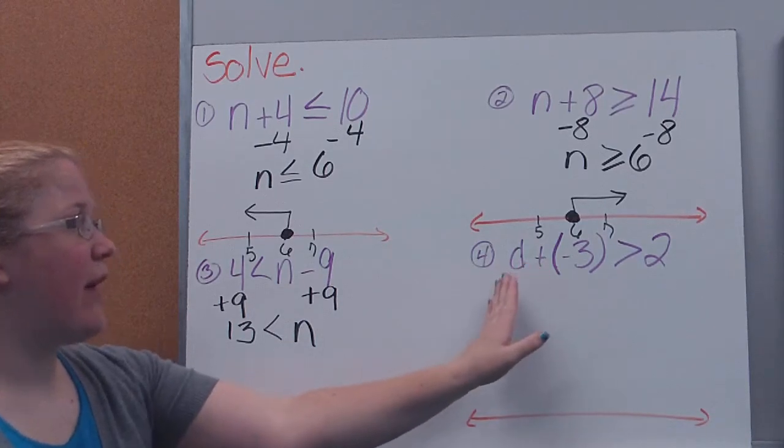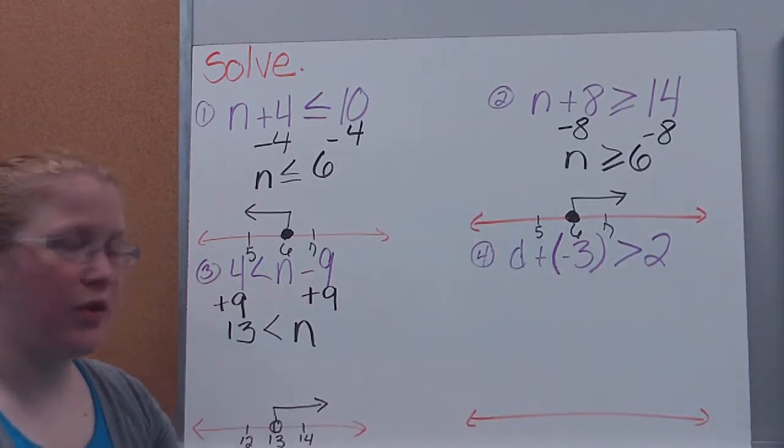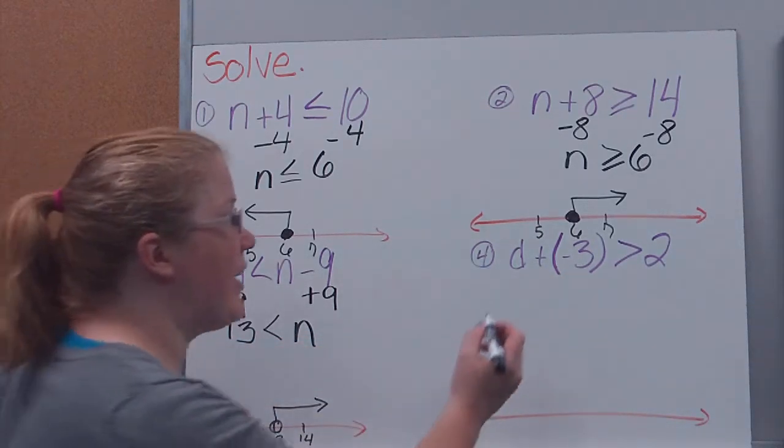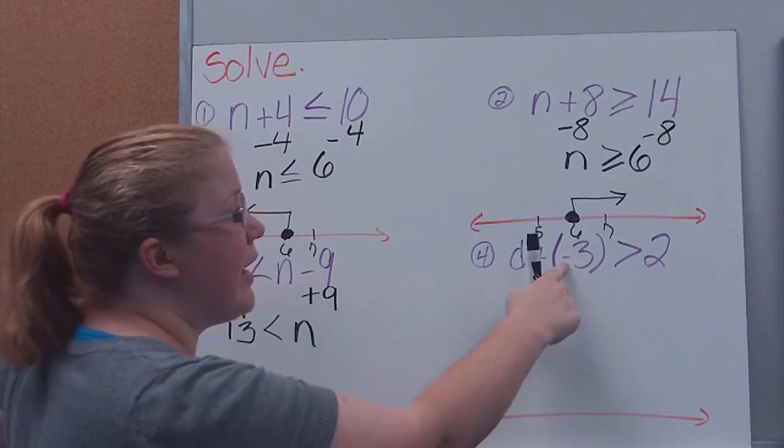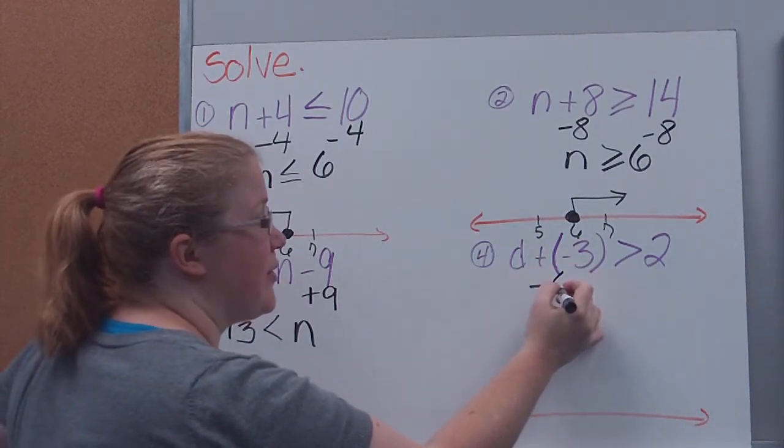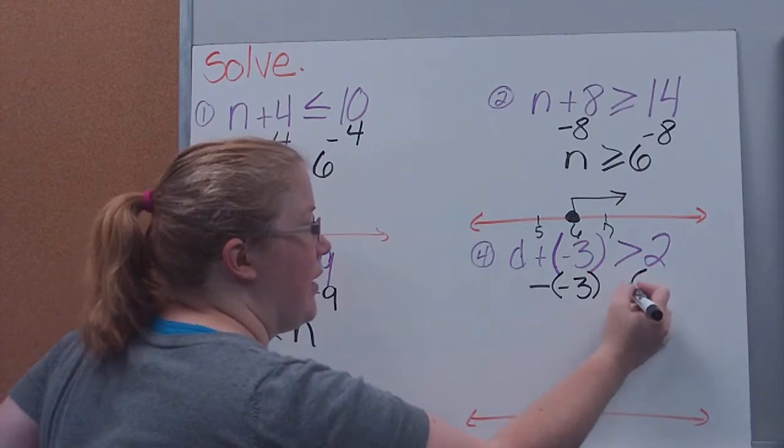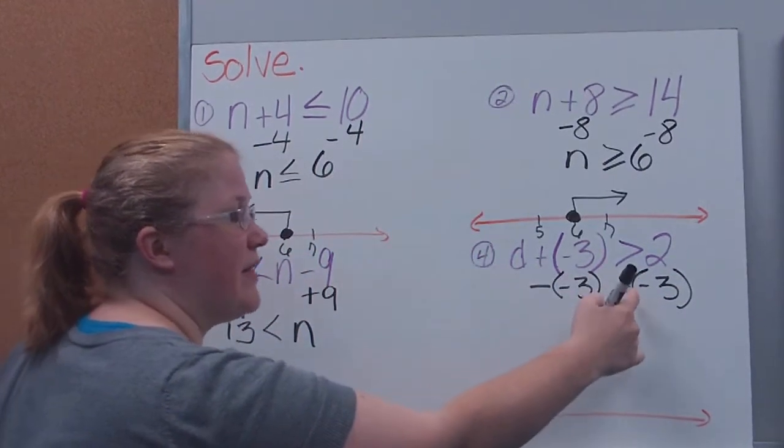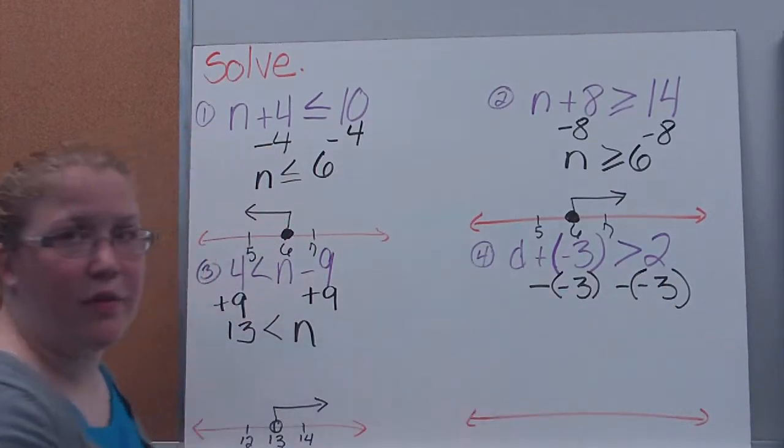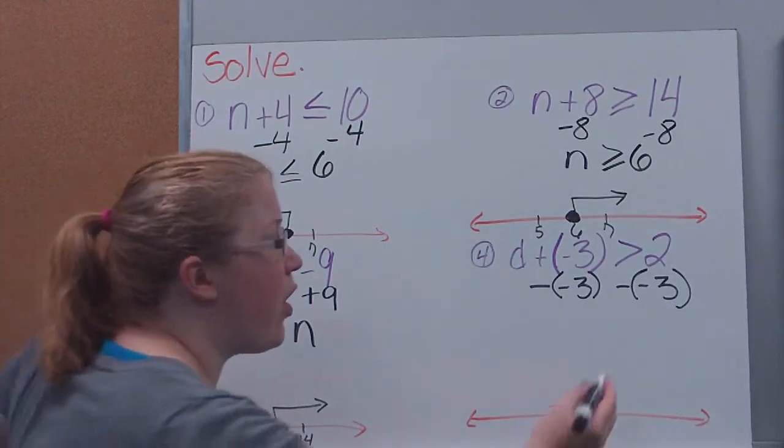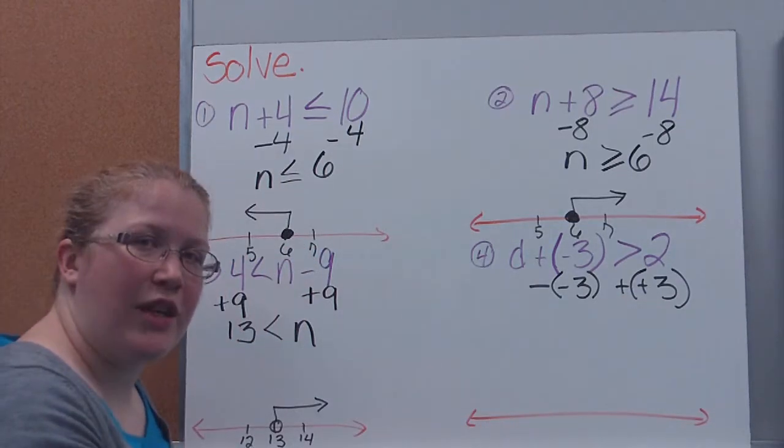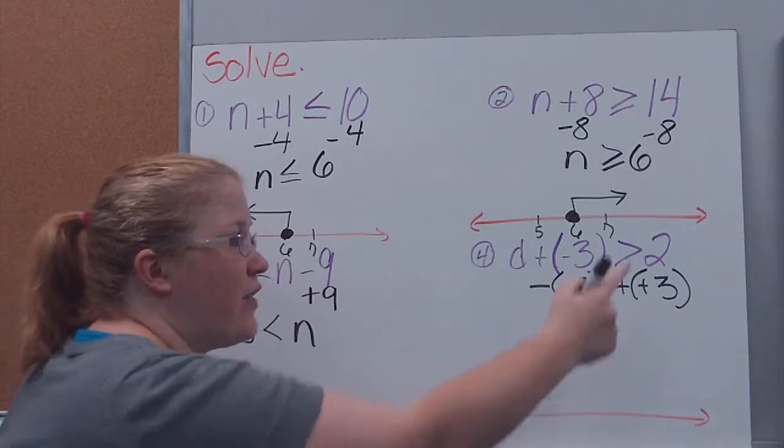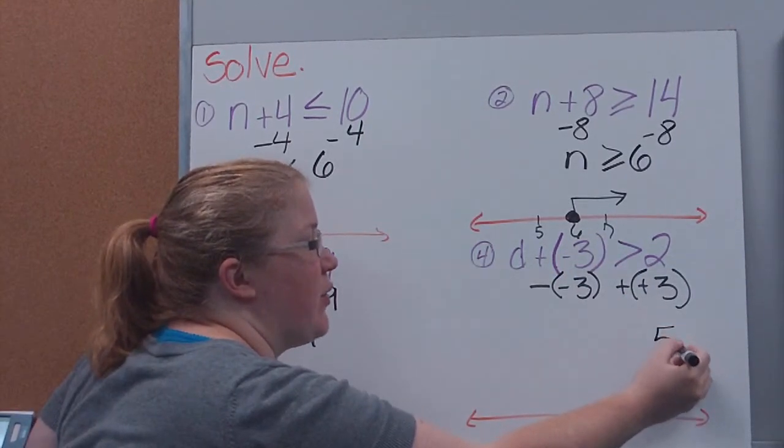Here I have d plus negative 3 is greater than 2. I'm doing addition, so to undo that, I need to subtract. However, remember, I need to subtract the exact same thing. I'm subtracting negative 3. Since I'm subtracting negative 3 from this side, I also need to subtract negative 3 from the other side. Now, if you'll recall, when we're doing our operations, whenever we subtract, we change it to addition by adding the additive inverse. So now I have a 2 plus 3 on this side, which is going to give me 5.